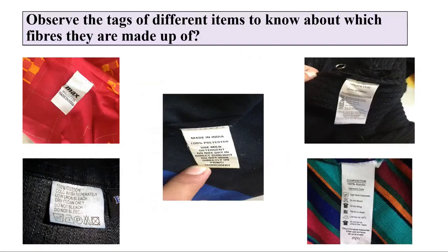If you want to know about different fibers, observe the tags of different items at your house. You will notice that some are made of 100% cotton, some of 100% polyester, some of acrylic, and some of wool.